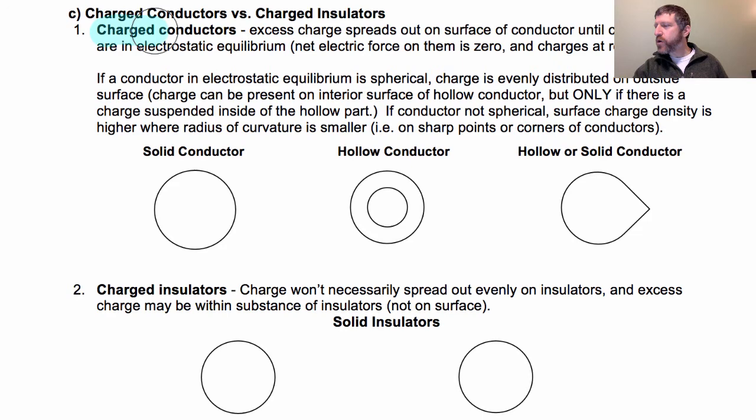In charged conductors, the excess charge always spreads out on the surface until the charged particles are in what we call electrostatic equilibrium. This is when the net electric force on them is zero and also the charges are at rest. So if you have a conductor in which the charges are at rest, we call that electrostatic equilibrium.